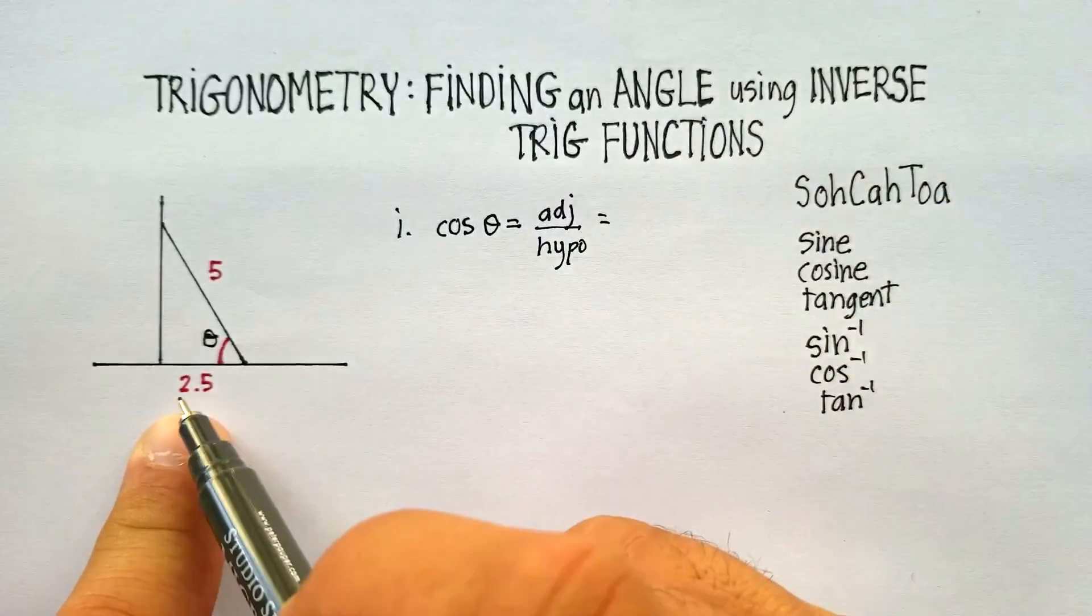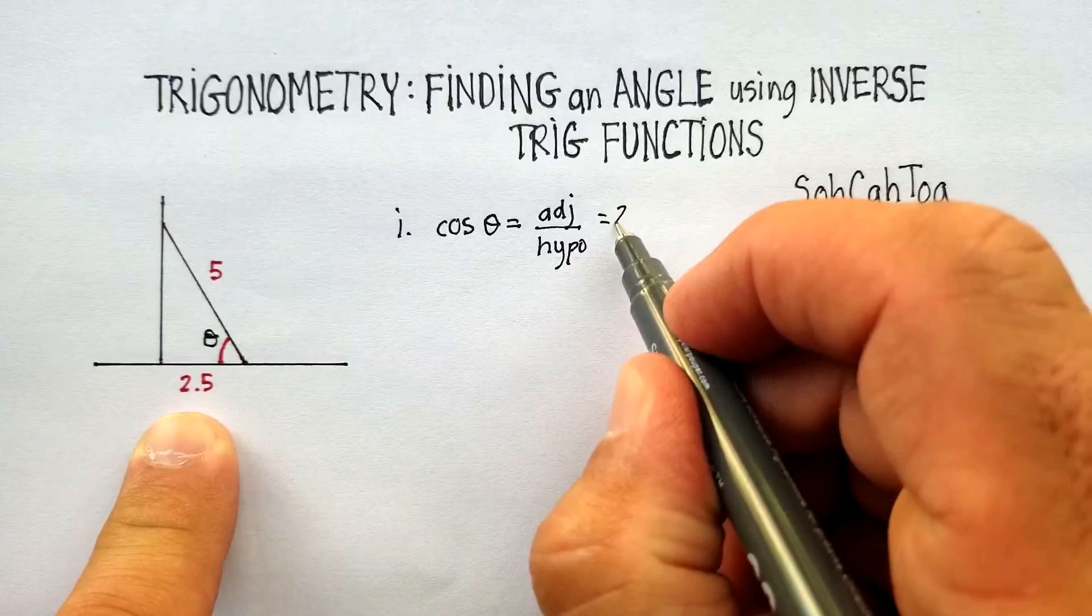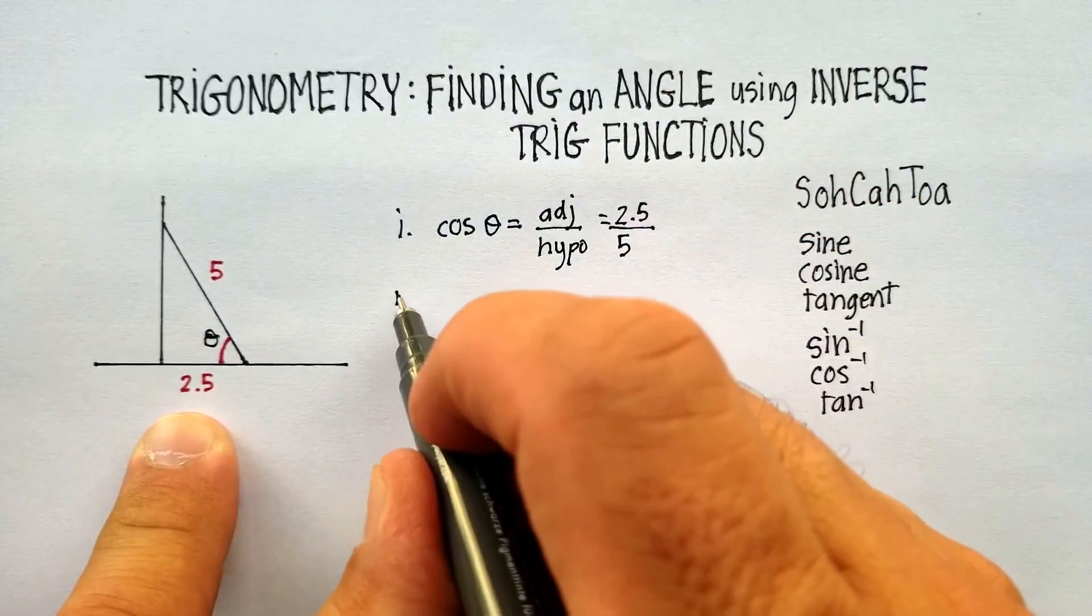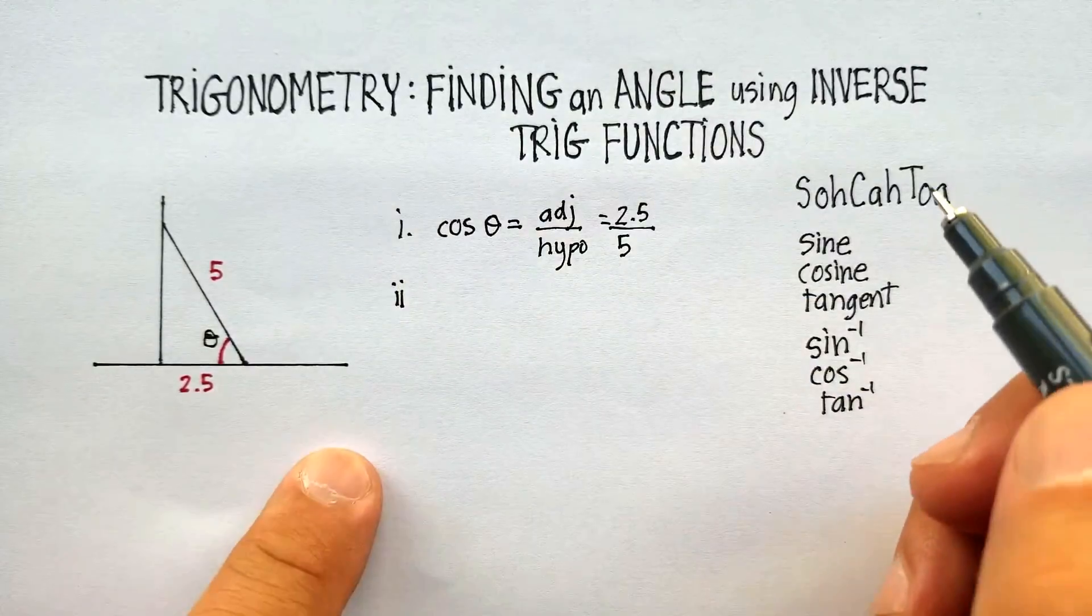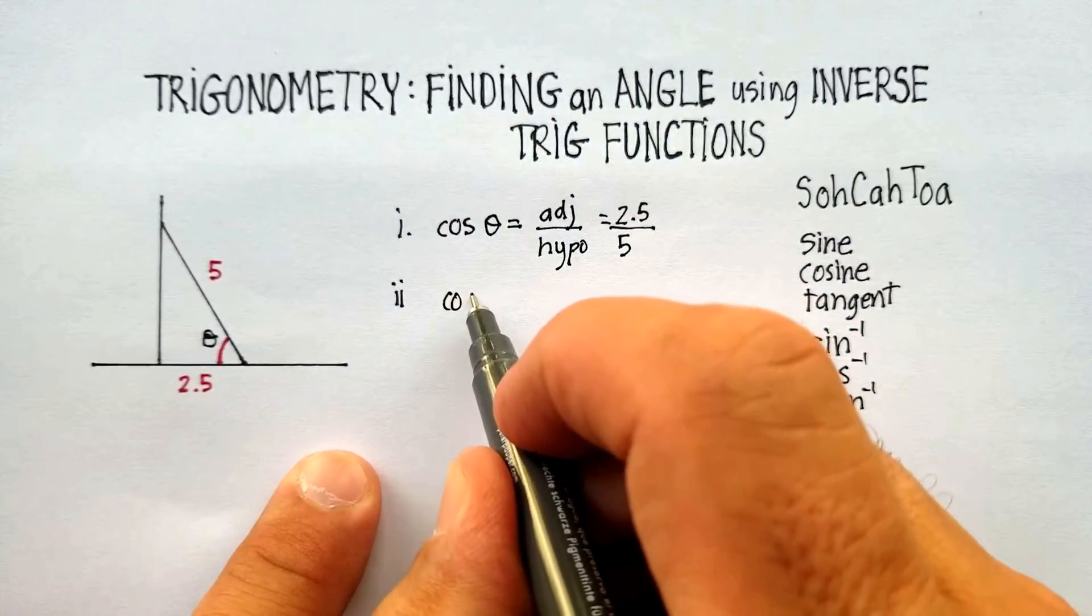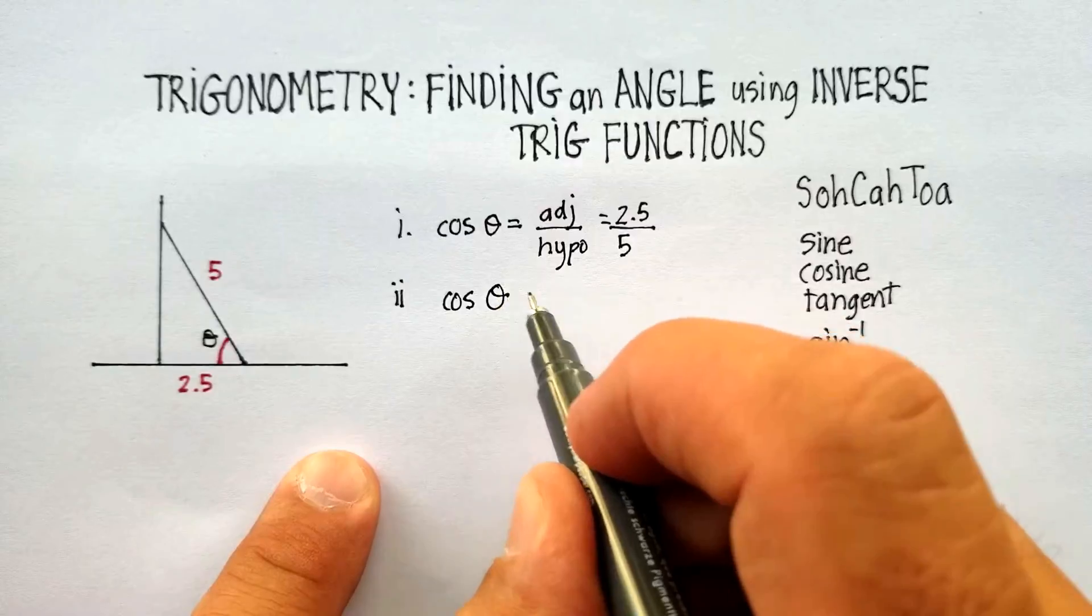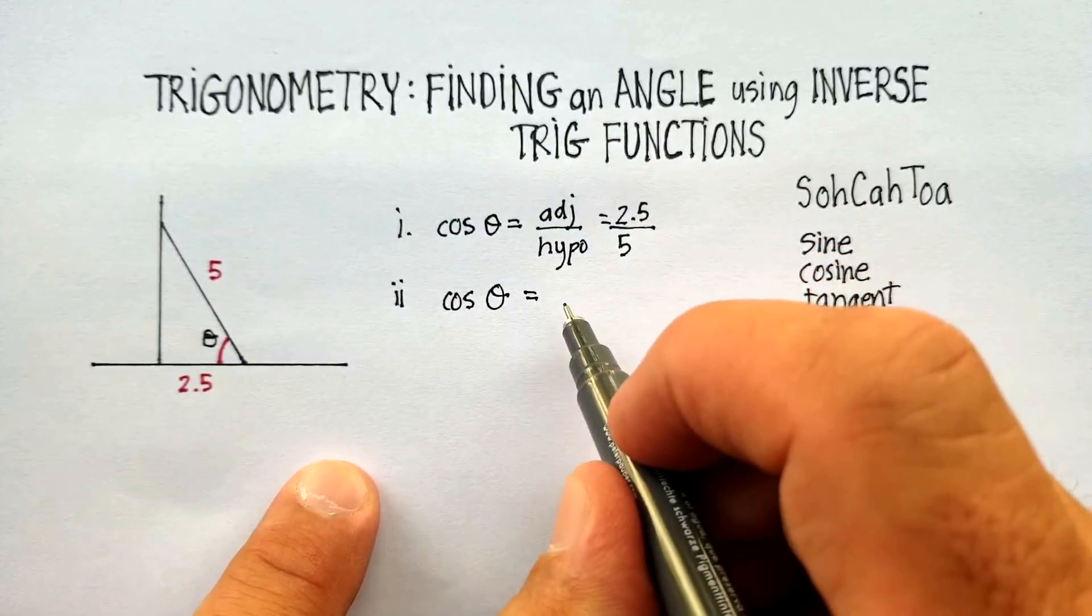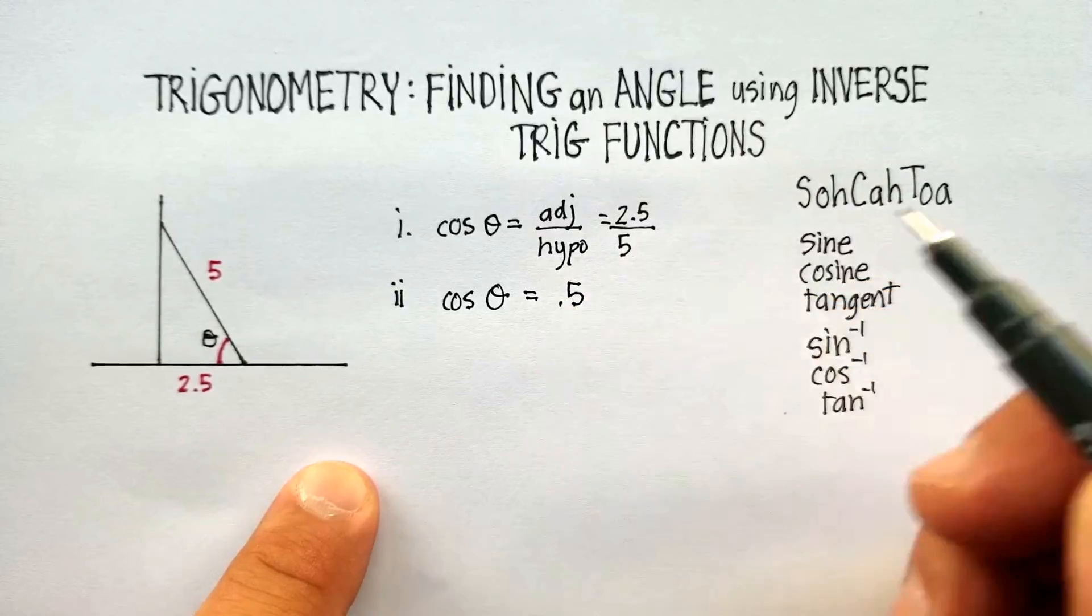In this case, the adjacent is 2.5. The hypotenuse is 5. Now, what is that equal to? I get cosine of theta is equal to 0.5, or just half.